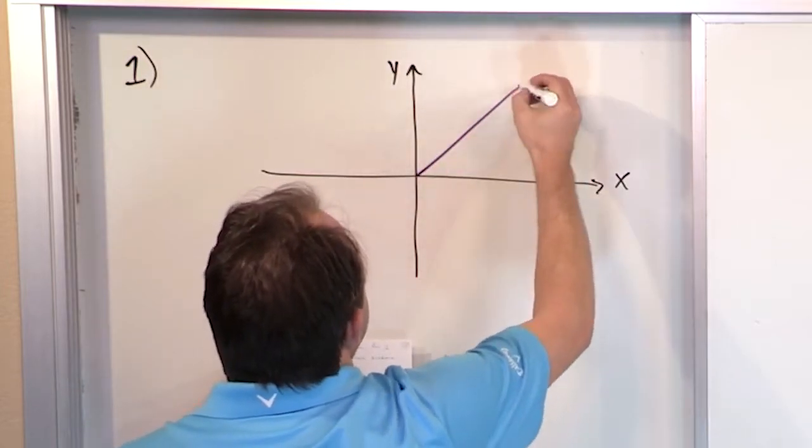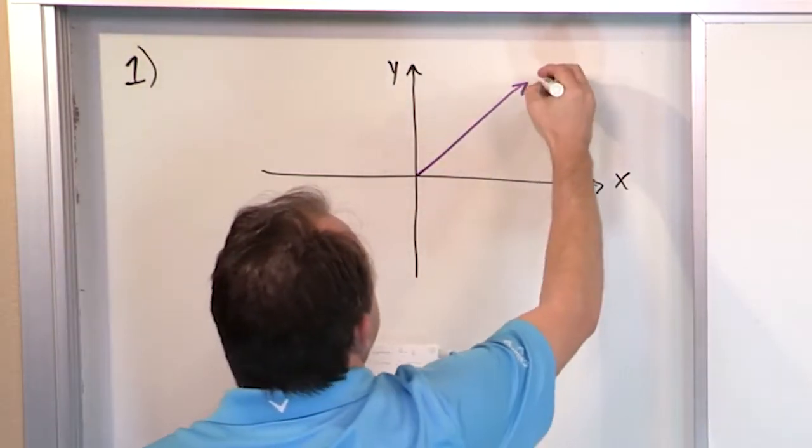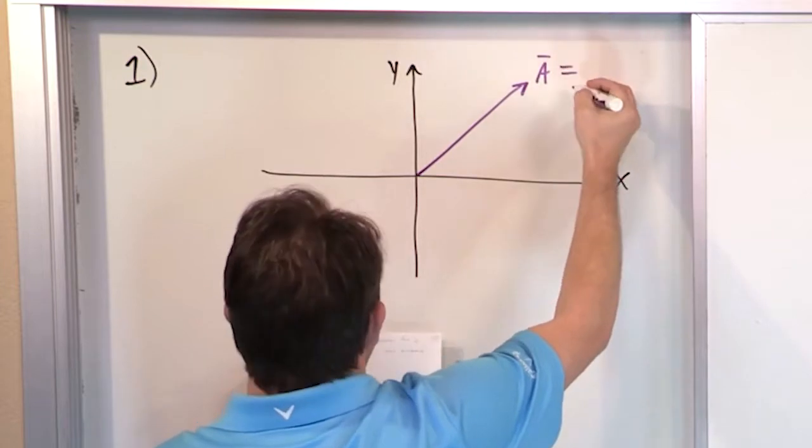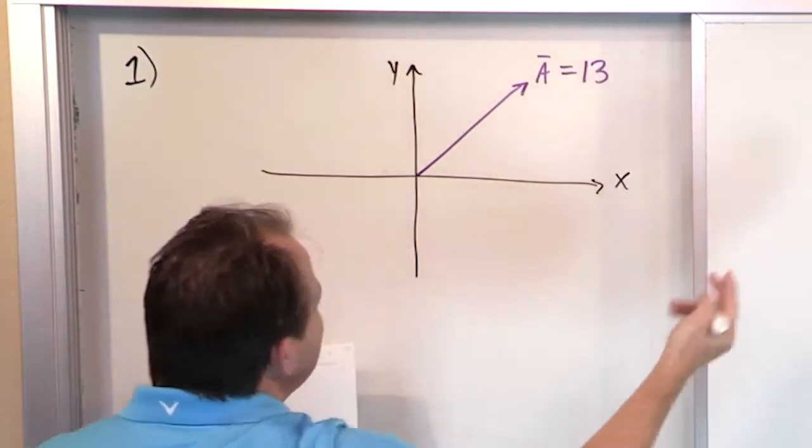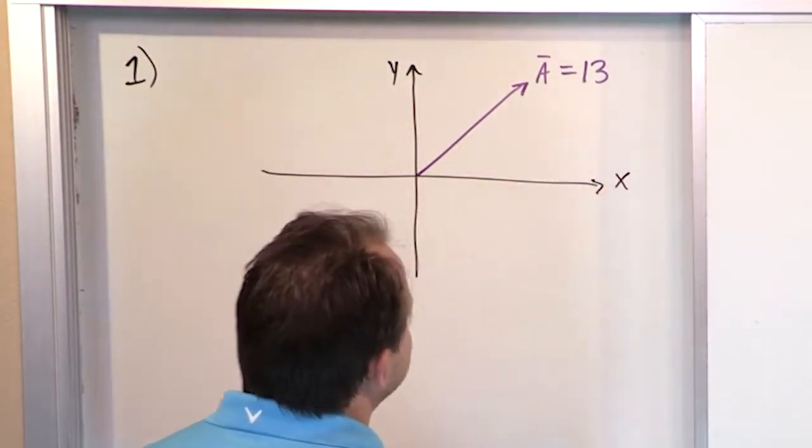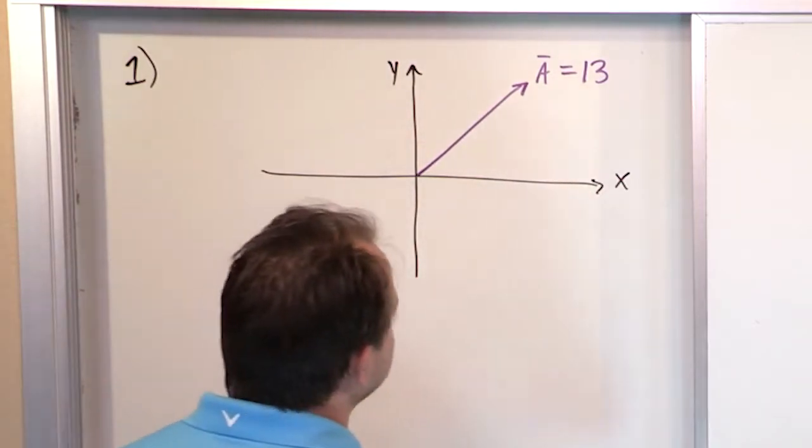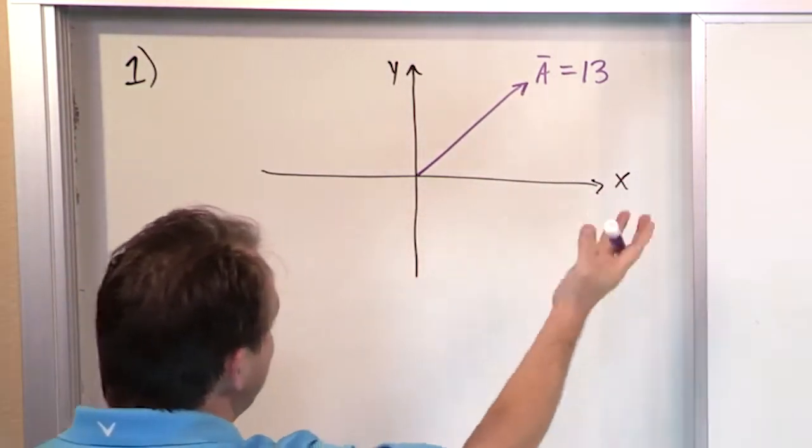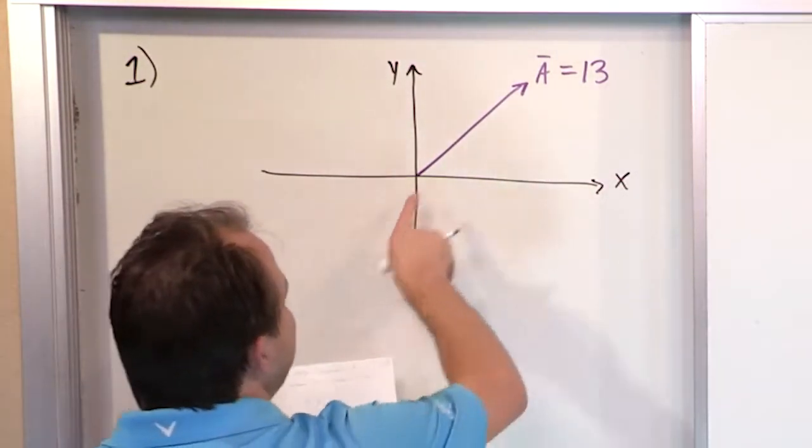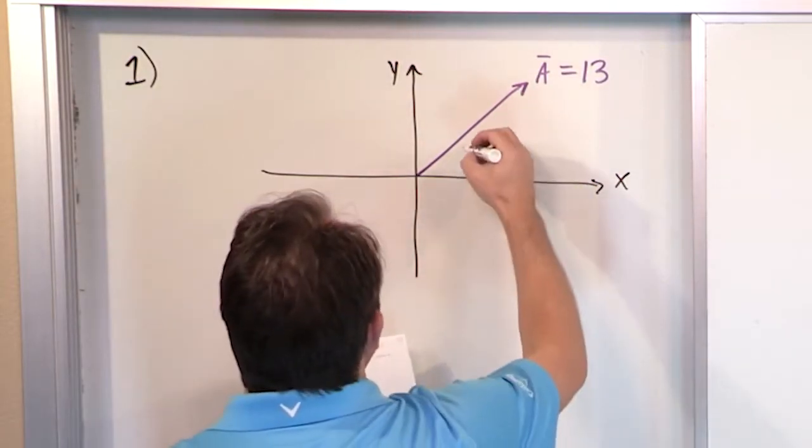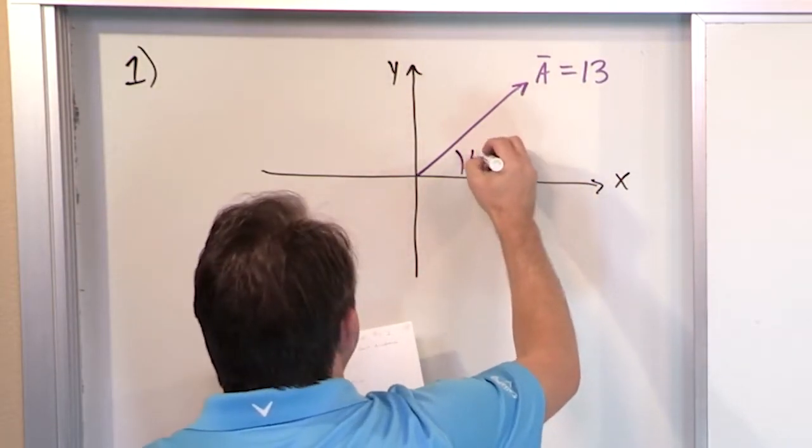And let's make it easy. Let's draw this at a 45 degree angle. So the vector A has a magnitude of 13. Could be meters, could be meters per second if it's velocity, could be newtons if it's force, which we'll talk about later, could be whatever for a magnetic field, whatever. It's some arrow with a unit of 13 long. And the angle here is 45 degrees.